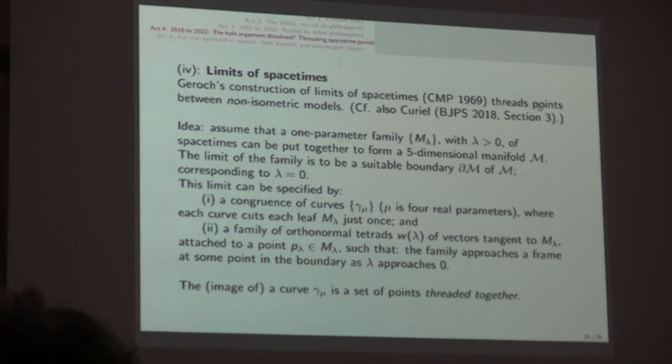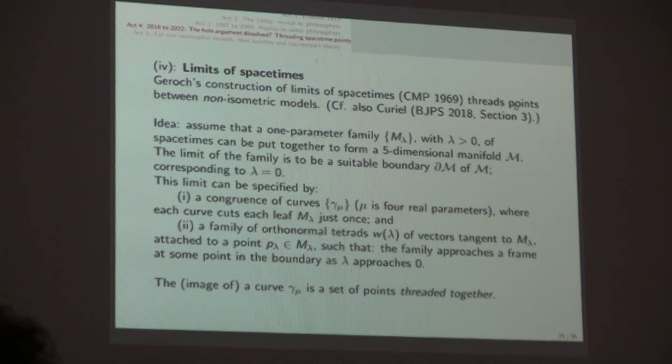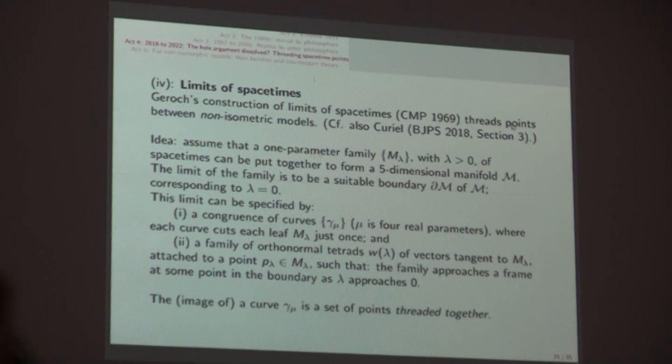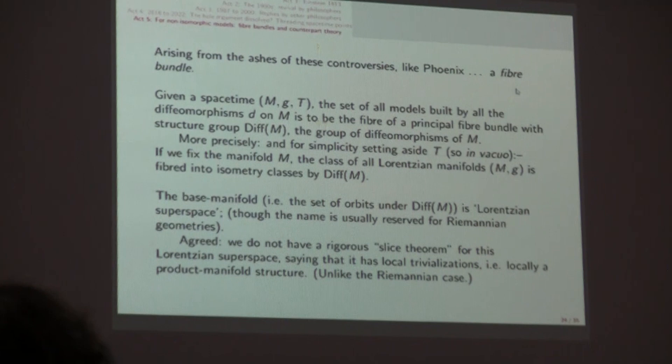He assumes that you're given a one-parameter family of spacetimes, four-dimensional, M sub lambda, one-parameter family with lambda greater than naught. He assumes that you can put them together into a five-dimensional manifold curly N, and the limit of the family is going to be a suitable boundary of this curly N, corresponding to lambda equals naught. And he makes a certain construction, but what's important is that there's going to be a congruence of curves, not a canonical one, there are different curves you could adopt, but there's a congruence of curves threading points between one four-dimensional manifold and a non-isometric other four-dimensional manifold.